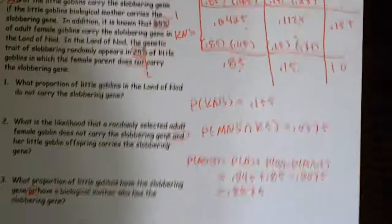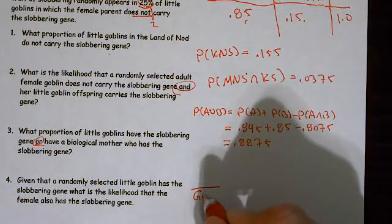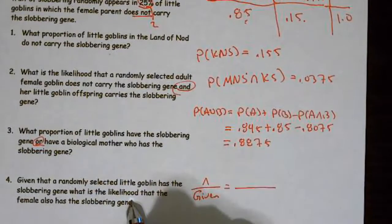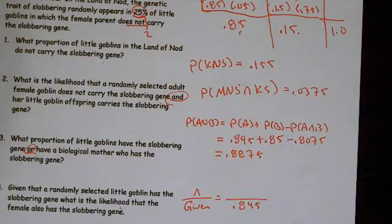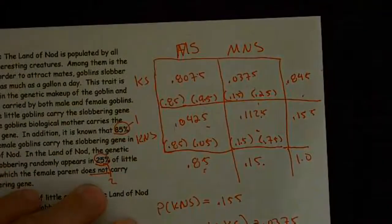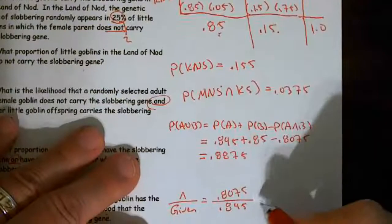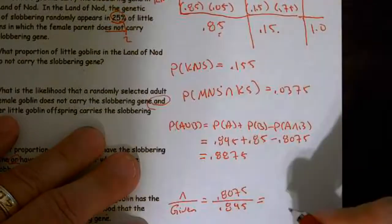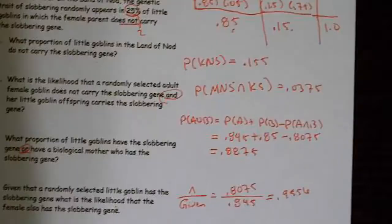Given that a randomly selected little goblin has a slobbering gene, what's the likelihood that the mom also has the gene? We're given the kid has the gene — probability 0.845. The intersection of kid has gene and mom has gene is 0.8075. So the conditional probability equals 0.8075 ÷ 0.845 = 0.9556.